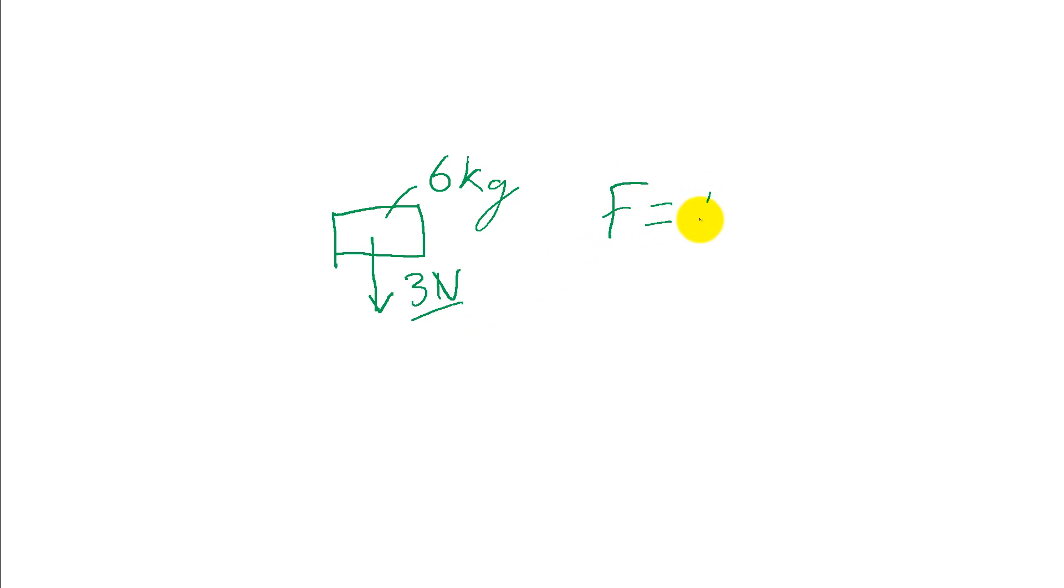Our F is ma. Summing all the forces is nice and easy when we've only got one. We've got three is our mass, which is six, times our acceleration. Our acceleration is just going to be half of a meter per second squared.